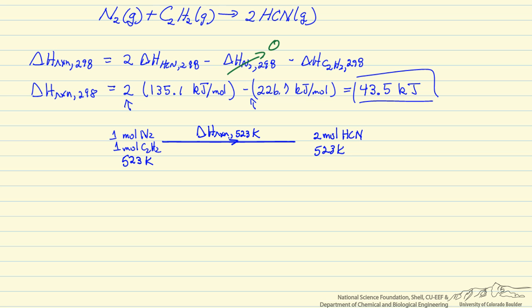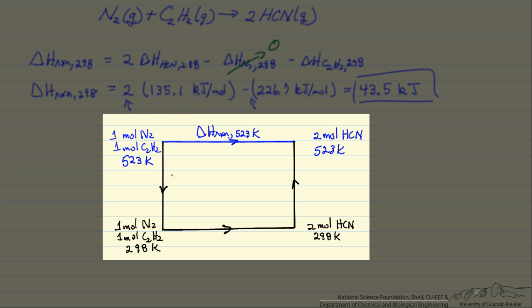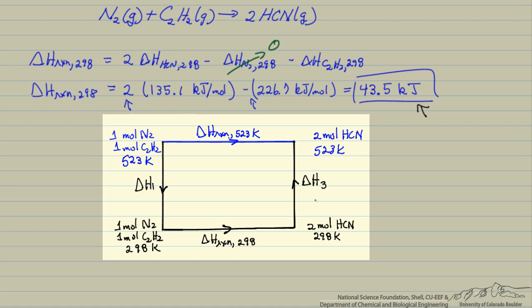So what we are going to do is say let's cool the reactants down to 298. We can calculate that energy change from heat capacity. Carry out the reaction at 298 Kelvin and then heat them back up to 523 Kelvin. So what I have drawn is an alternate pathway in black where first we cool down our reactants and there is going to be some enthalpy change. We are then going to carry out the reaction at 298 Kelvin, and so this is the heat of reaction at 298 Kelvin which we calculated. And then we are going to heat the products back to 523, called it delta H3.